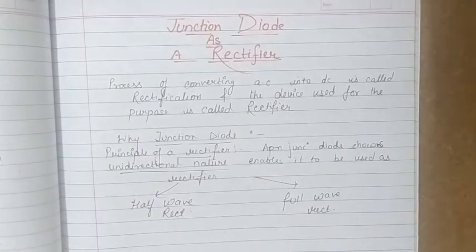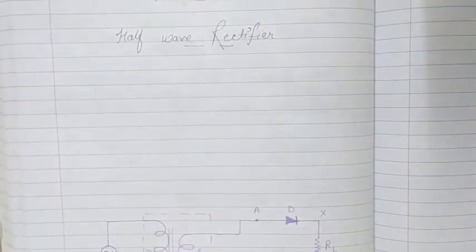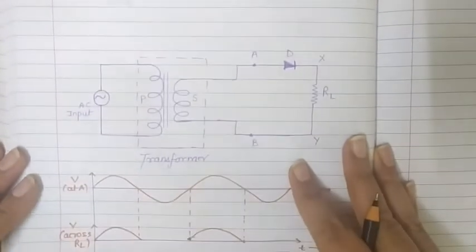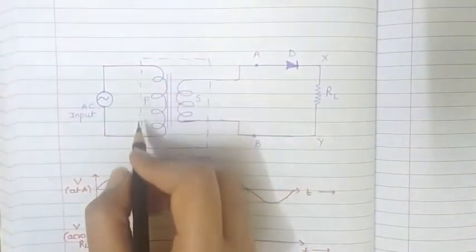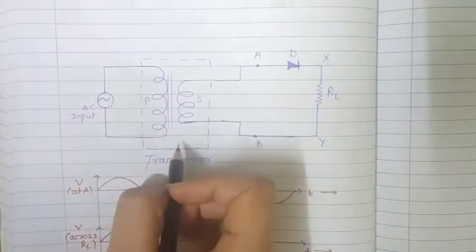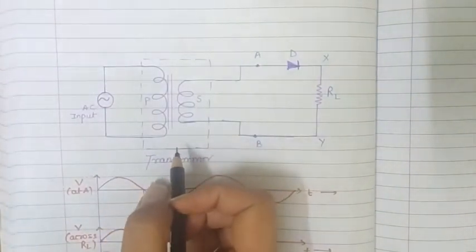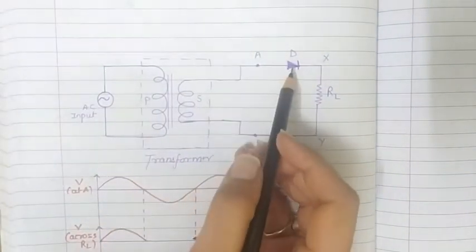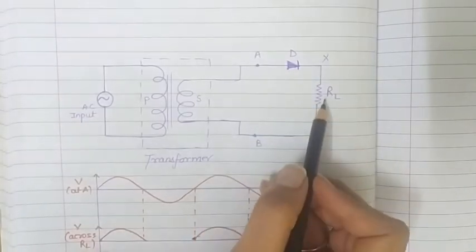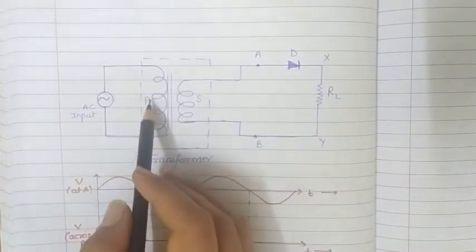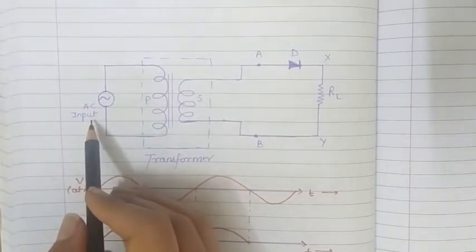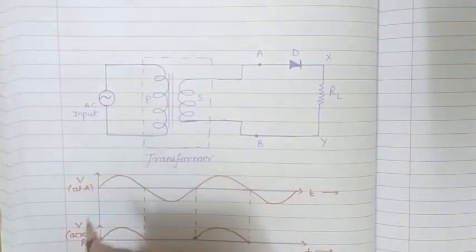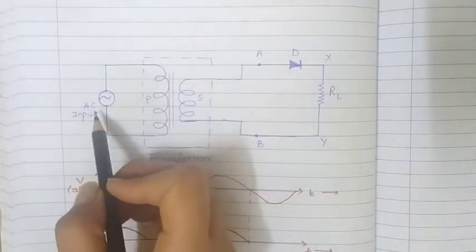First we will study about the half wave rectifier. Here is the diagram - it consists of a transformer, a junction diode D, and a load resistance RL. The primary coil of this transformer is connected to an AC source from where we are getting the input which we want to change.